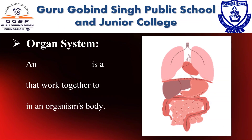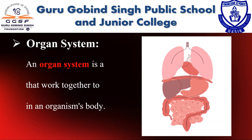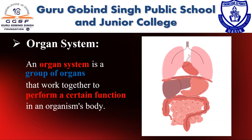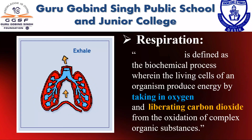Let's begin with our first module, that is organ system. An organ system is a group of organs that work together to perform a certain function in an organism's body. Various organs like digestive, respiratory, circulatory, nervous, excretory, reproductive, skeletal, and muscular systems are functioning in our body.